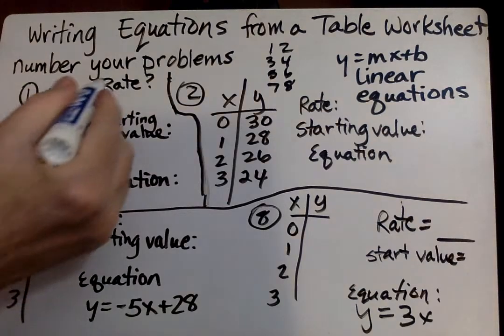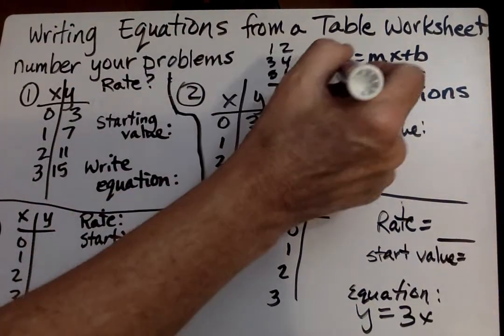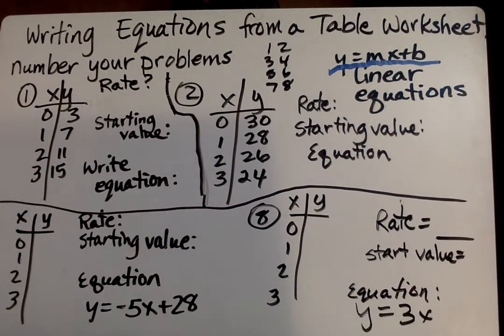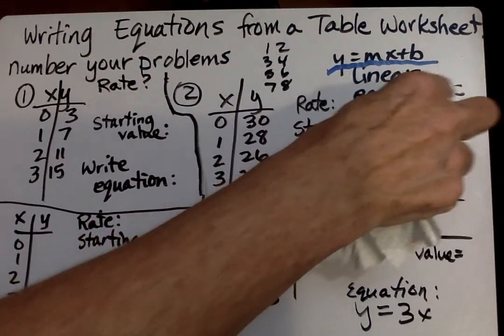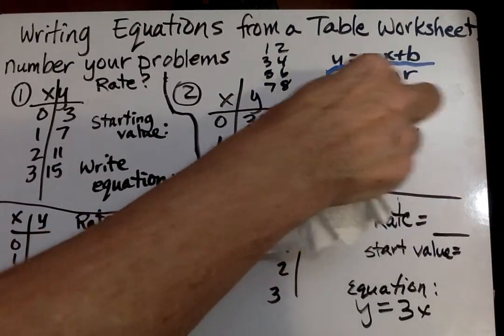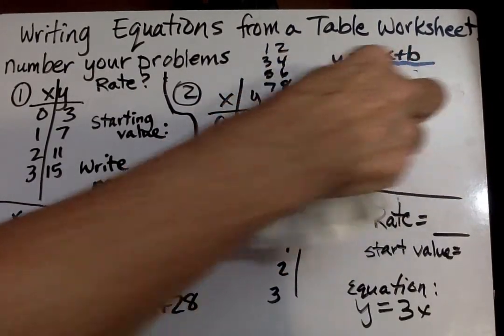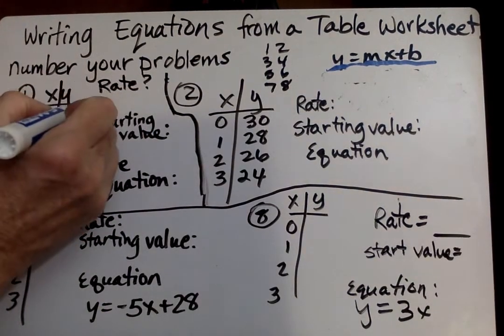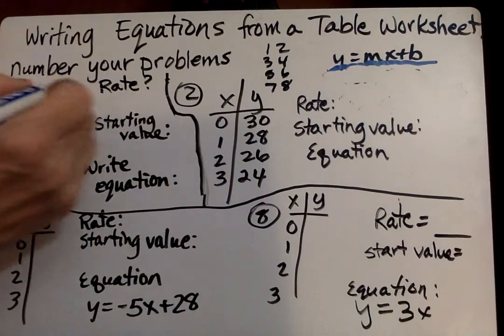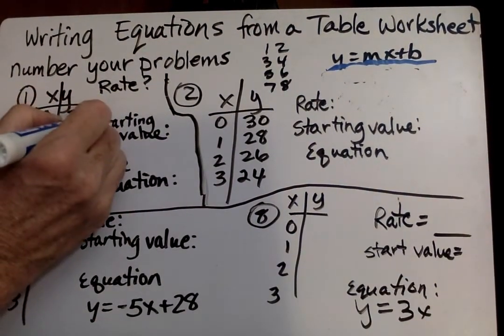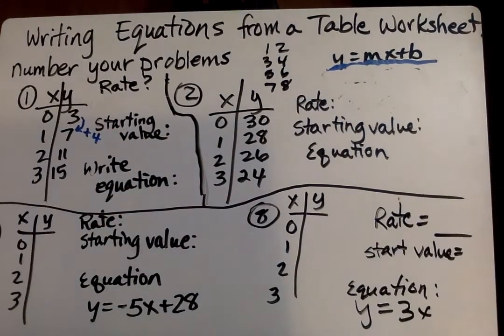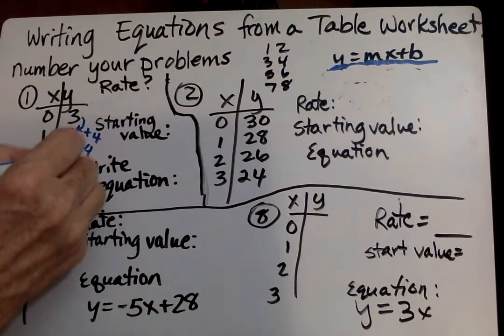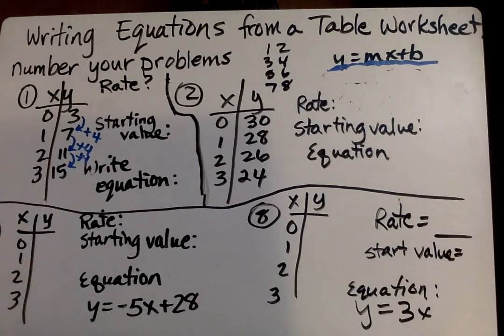So they're asking the rate, the starting value, and then they want you to write the equation. We're going to be writing the equation like this, Y equals MX plus B. And that's going to be linear equations. If it's not a linear equation, we just put not linear on there. So to find the rate, we find the difference of the Y's and the difference of the X's. So 3 plus what is 7? We're going to add 4. And is 7 plus 4 11? And 11 plus 4 is that 15?